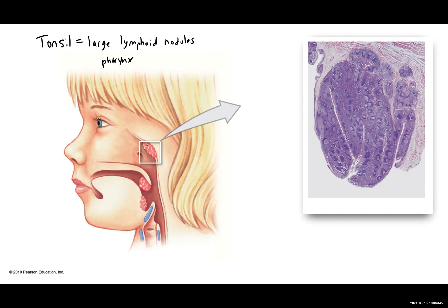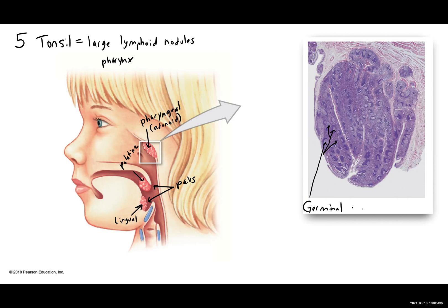You have a singular pharyngeal tonsil, which can also be referred to as an adenoid. Then the remaining tonsils are in pairs: you have two palatine tonsils, although we're just seeing one in the diagram, and you have two lingual tonsils — again just one shown — giving you five total tonsils. In this blown-up picture, all of those clear, circular, obvious locations we're seeing are the germinal centers, which are locations for dividing lymphocytes.